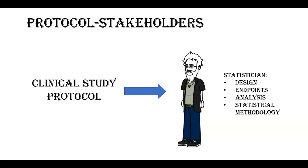A statistician is a key stakeholder in protocol development. A statistician is also involved in determining the design elements, as discussed previously. In addition to the design, the statistician is involved in defining the endpoints. If we would like to test whether our magic pill helps decrease headache, then our endpoints could be the number of episodes of headache or the duration of headaches. The statistician also defines what statistical methods should be used for assessing the results — should descriptive statistics be used, or should there be a statistical test? These methods are used to answer the question: does magic pill work?